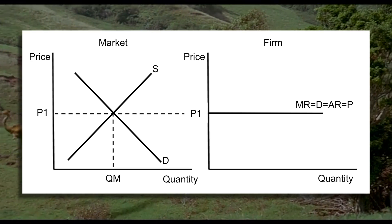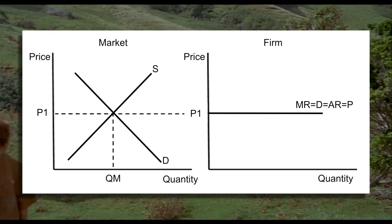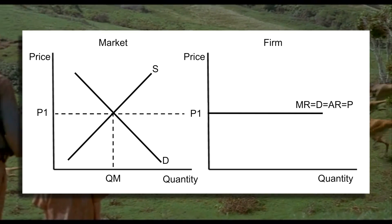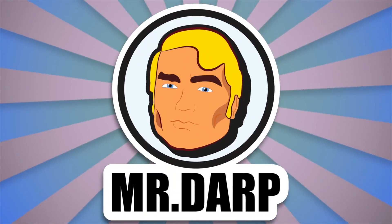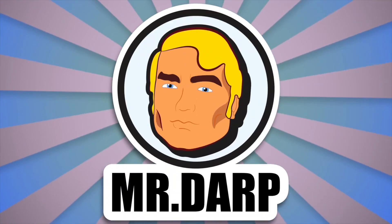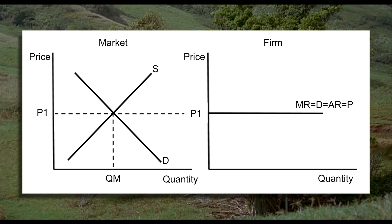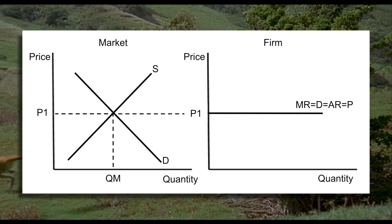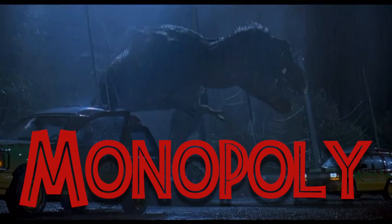The horizontal line is everything: it's the marginal revenue, the demand, the average revenue, and the price. That's right — Mr. DARP. You can learn more about him in another video. So that's the graph you need to know for a firm in perfect competition.